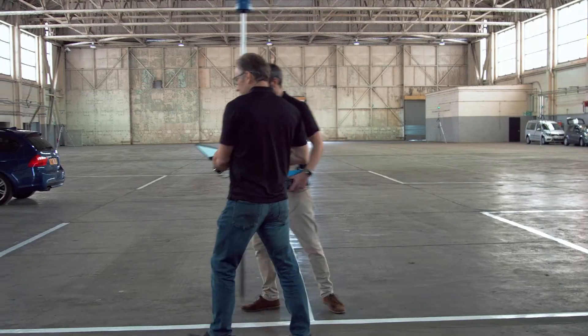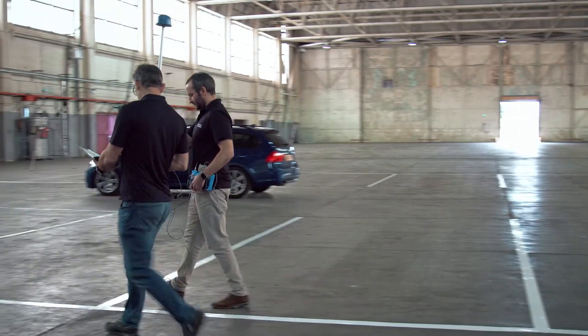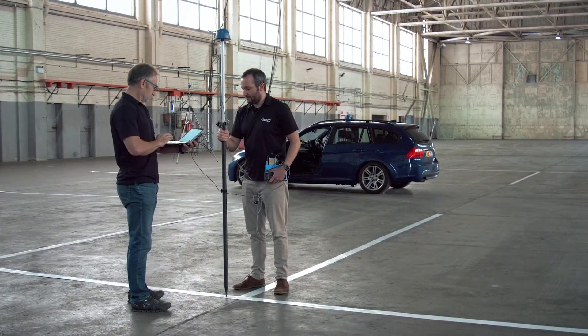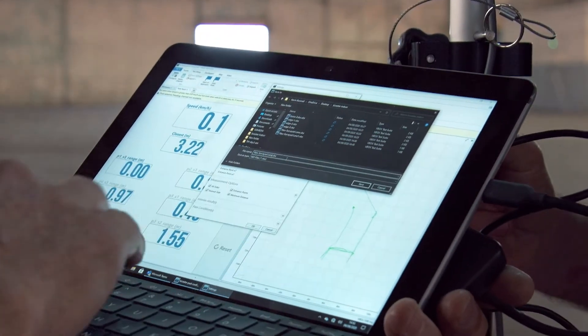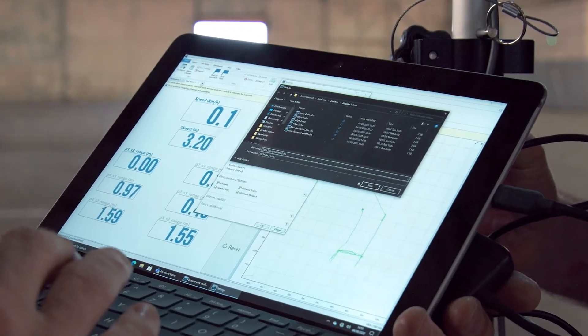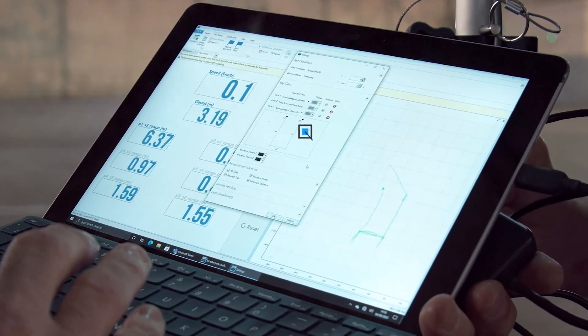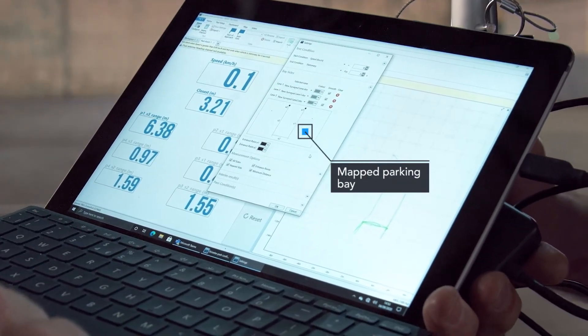Repeat this process for the other two lanes, making sure you are further out from the edge than the lane you have previously surveyed. When all three lanes have been surveyed and saved, the software's settings window will show an accurate diagram of the mapped parking bay. You can now click OK.